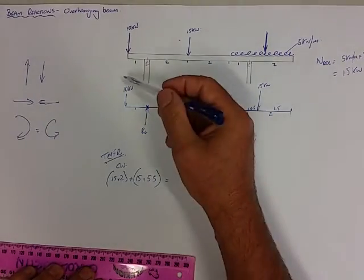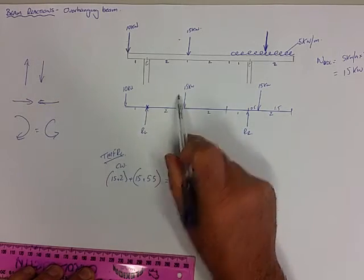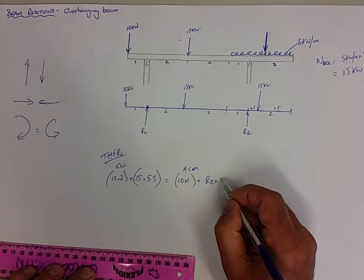So our anti-clockwise moments, we have 10 times 1, because that's causing an anti-clockwise moment. And we have R times 5.